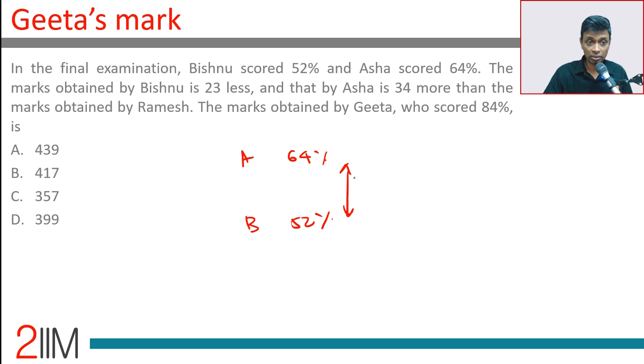Ramesh is somewhere here. Bishnu got 23 less and Asha got 34 more. We don't care about Ramesh's score. We care that this 57 marks corresponds to 12%. The marks obtained by Geeta, who scored 84%.